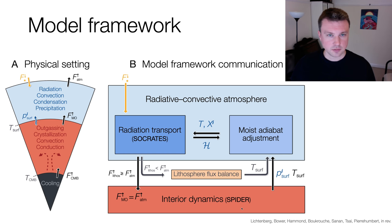This is connected, for instance, via the surface temperature and the outgassing behavior of the mantle to a radiative convective atmosphere model. In the atmosphere model, there is a temperature structure established and then connected to a radiative transfer code.